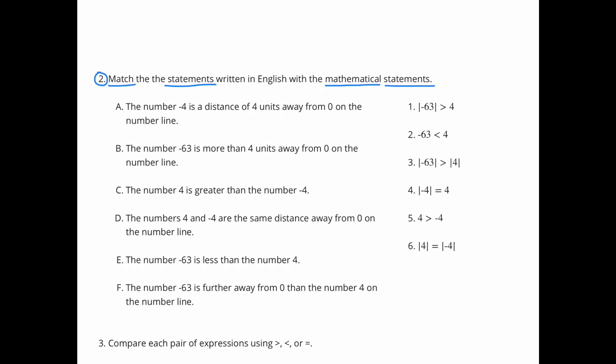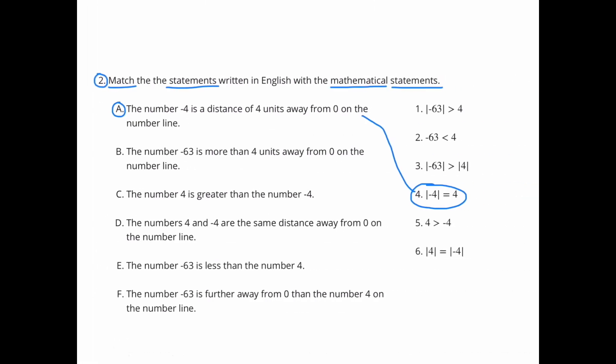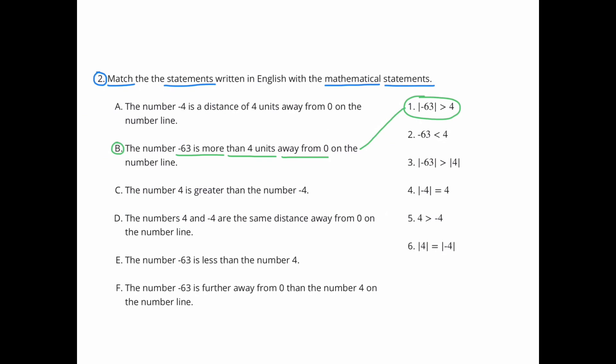Question 2: Match the statements written in English with the mathematical statements. A: The number negative 4 is a distance of 4 units away from 0 on the number line. That matches with statement 4: the absolute value of negative 4 equals 4. B: The number negative 63 is more than 4 units away from 0 on the number line. That matches with statement 1: the absolute value of negative 63 is greater than 4, because the absolute value of negative 63 is 63.